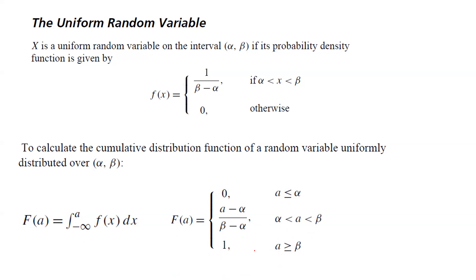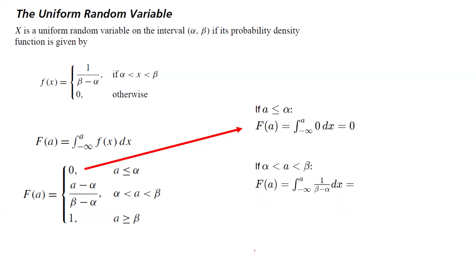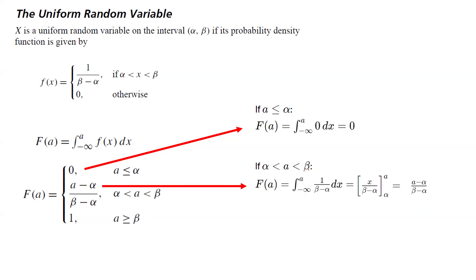Let us look at the calculations — these are all calculus. If a is less than or equal to alpha, F of a is the integral from negative infinity to a of 0 dx, which becomes 0. If a is bounded between alpha and beta, F of a is the integral of 1 over beta minus alpha dx. Since a is between alpha and beta, the lower bound is alpha and the upper bound is a, giving x divided by beta minus alpha evaluated from alpha to a, which yields a minus alpha divided by beta minus alpha.